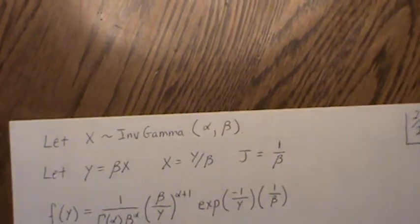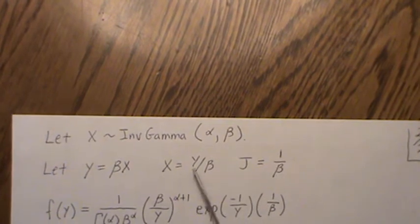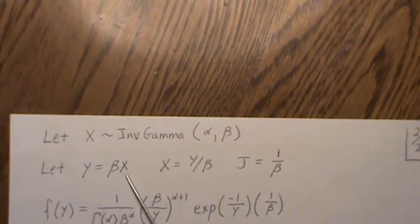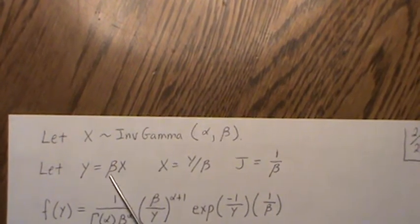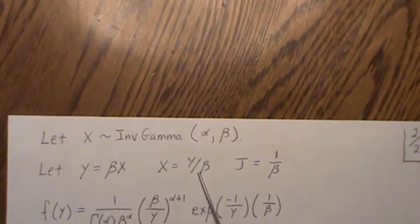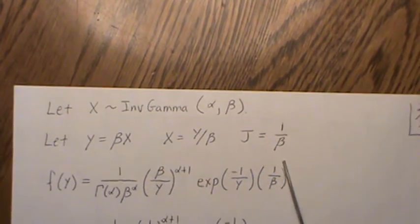Now the second property is if we have an inverse gamma distribution alpha and beta, and we let Y equal beta times X—and really this can be any constant but beta times X—then we back solve for X and find the Jacobian of the transformation.